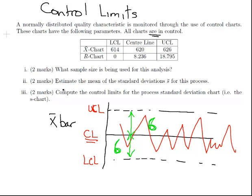We're also given the R chart. The lower control limit there is 0, the center line is 8.236, and the upper control limit is 18.795. It's not necessarily symmetric in the case of the R chart because you can't have negative values, so it's trimmed at 0.